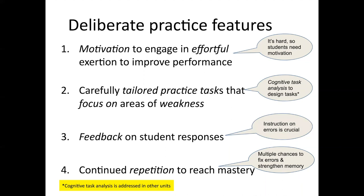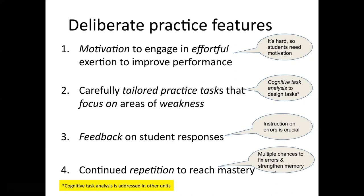Feedback and error instruction are crucial because learning is about reducing errors, and students who aren't practicing can have an illusion of knowing — it feels like they understand, but when they need to bring knowledge to bear, they may find they didn't have the full idea, had an approximate version that doesn't work in some contexts, or have trouble retrieving it. The fourth feature is continued repetition for multiple chances to fix errors, strengthen memory, and see the concept or skill in multiple contexts to build general, accurate knowledge that works in new situations.